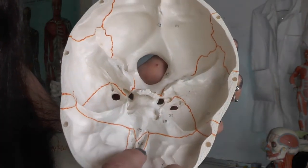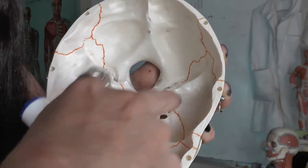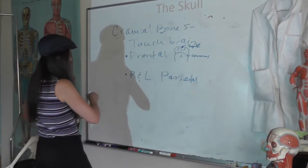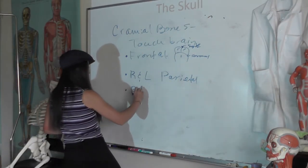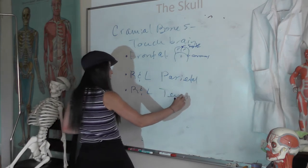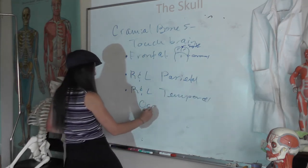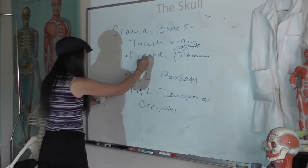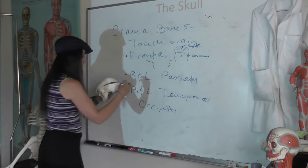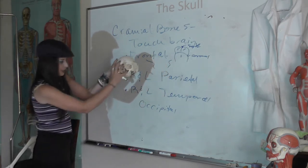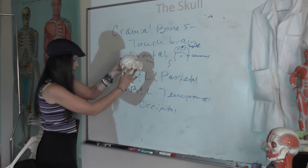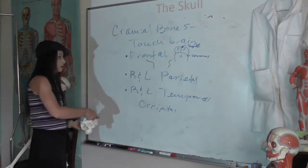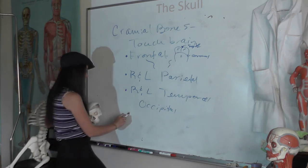Frontal bones, ethmoid bones, sphenoid bone, temporal bones, occipital bone, parietal bones on top. Left and right parietal, right and left temporal. One occipital in the back. And then kind of weird, but going down and also forming part of your nasal cavity and all that, are the ethmoid and sphenoid bones, and they also touch your brain. So those would be our last cranial bones — the ethmoid and the sphenoid.